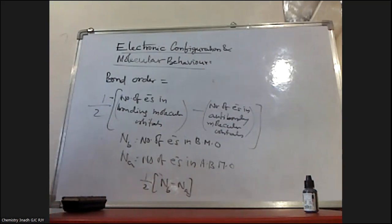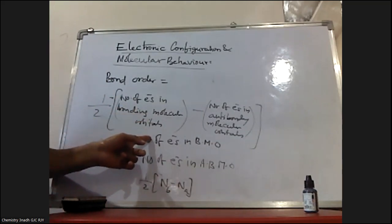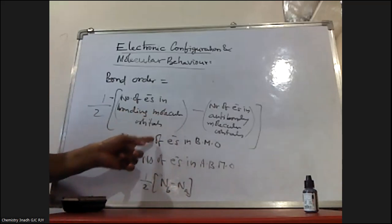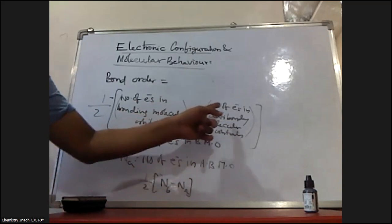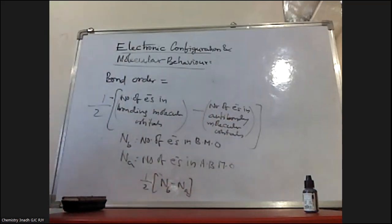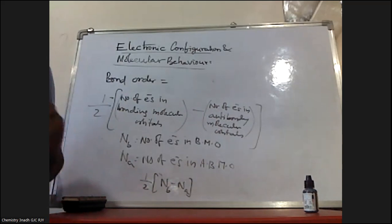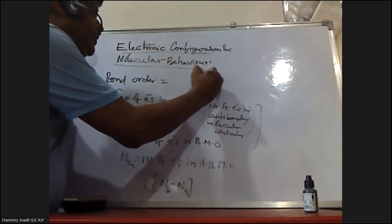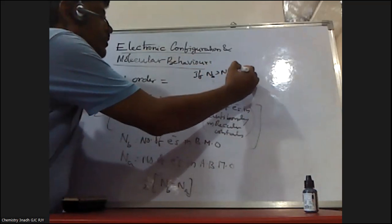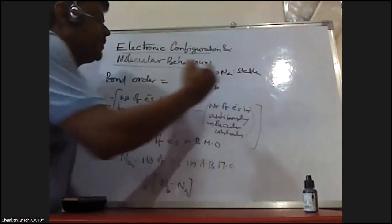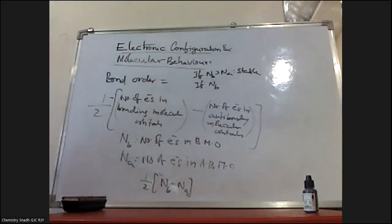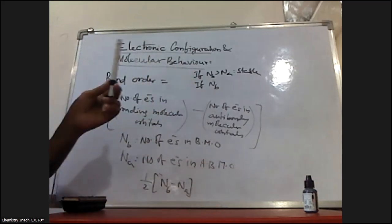Bond order is half the difference between the number of electrons present in bonding molecular orbitals minus the number of electrons present in the anti-bonding molecular orbitals. If N-b is greater than N-a, the molecule is stable. If N-b is less than N-a, or N-b equals N-a, then bond order indicates an unstable molecule.